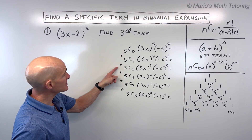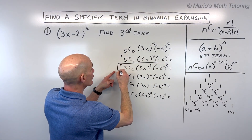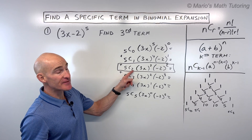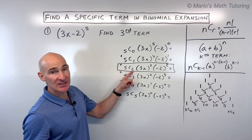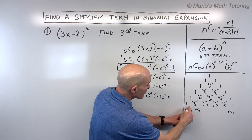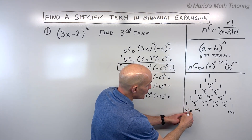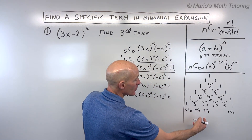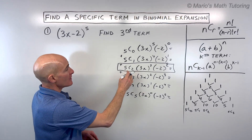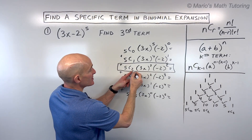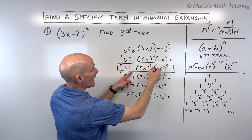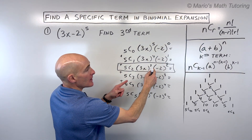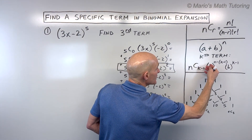The third term is the one with 5C2. Notice we wanted the third term, but it uses 5C2 — one less. That's because in Pascal's triangle we start with 5C0, 5C1, 5C2, so the third term is one less. The r value and the second term's exponent match at 2, and the two exponents must add to five: five minus two gives three for the first term's exponent.